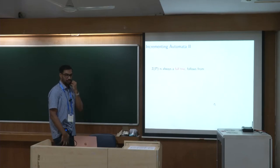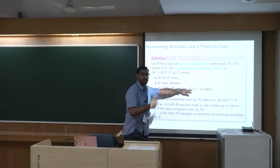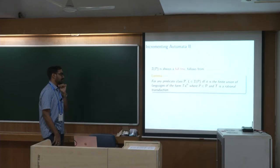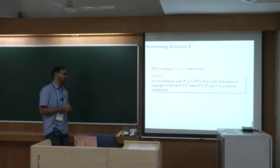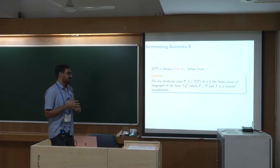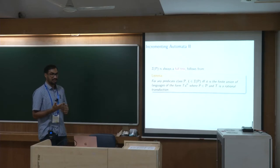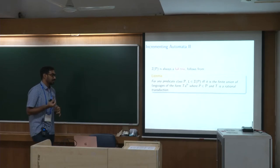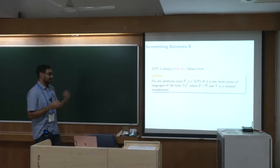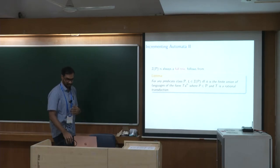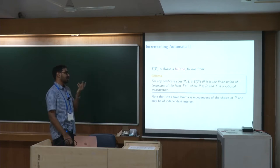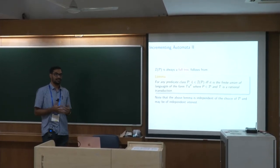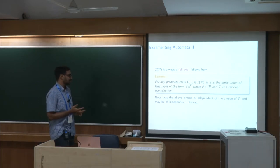IP is always closed under rational transductions. This follows from the lemma that any such language is a finite union of languages of the form T(a^p), where p is a predicate from P and T is a rational transduction. For every accepting pair (q, p) you get one such T(a^p), and the result is just a finite union of these. The closure under transduction comes from the fact that this model is a finite-state machine augmented by a data structure.